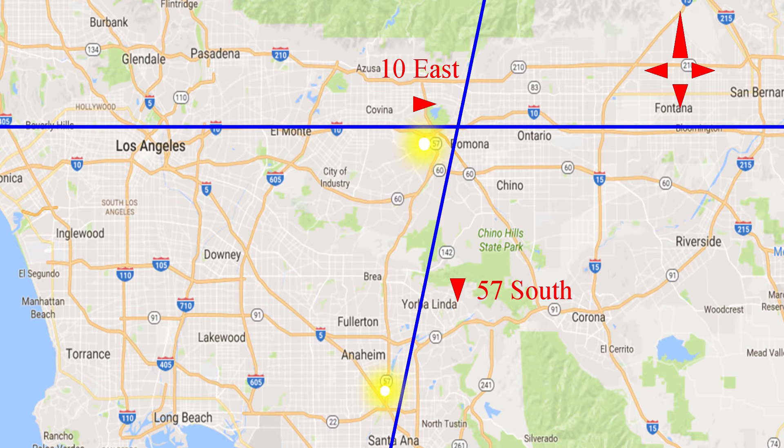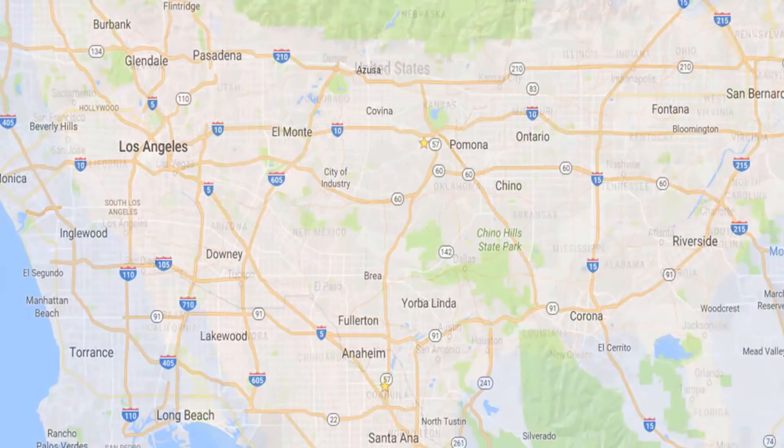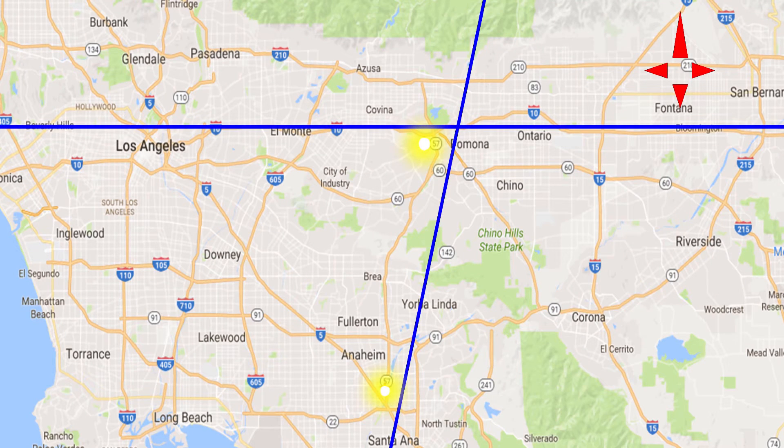However, if you think about it, this information is also incomplete. You can take 10 east, but 10 goes all the way from Santa Monica, California, all the way to Jacksonville, Florida, covering almost 4000 kilometers. We don't want to go that far on 10 east to take 57 south.